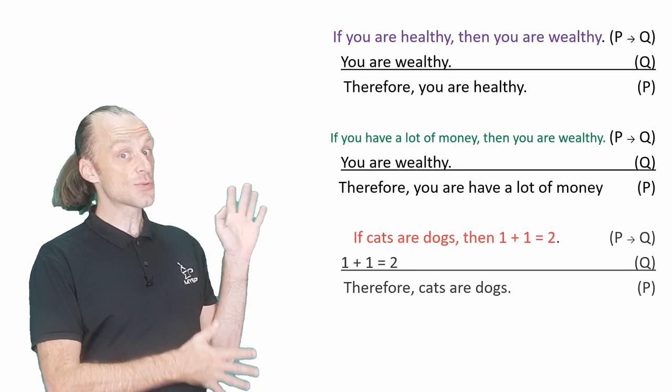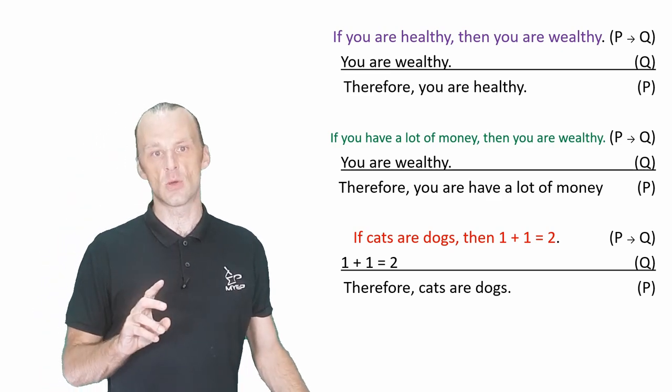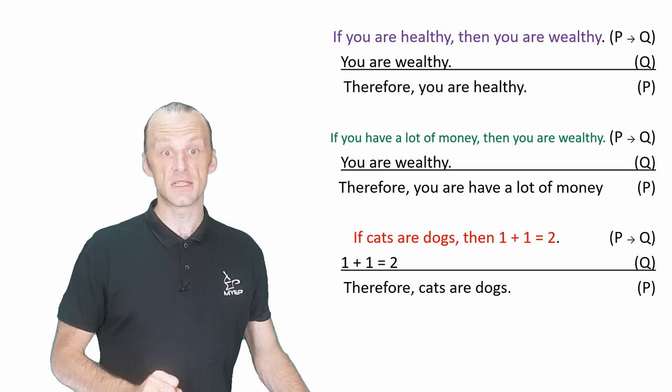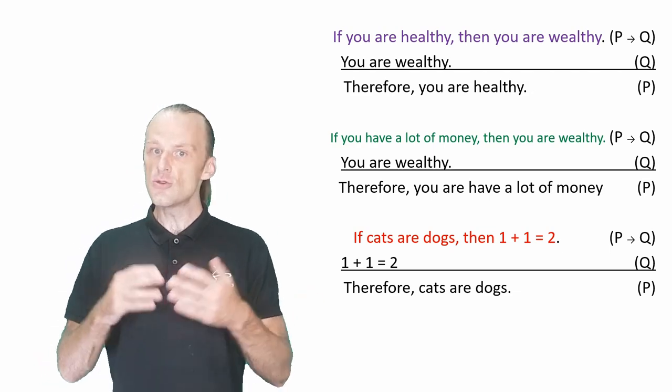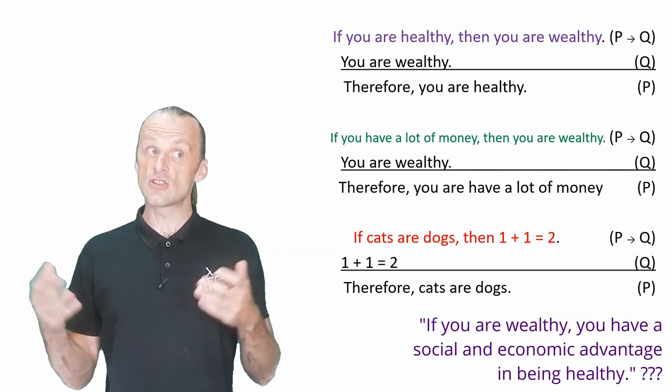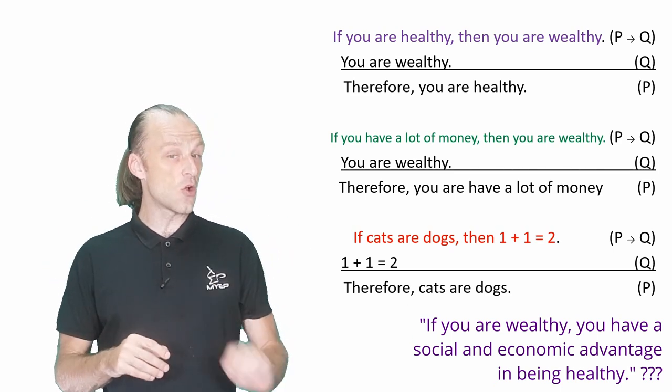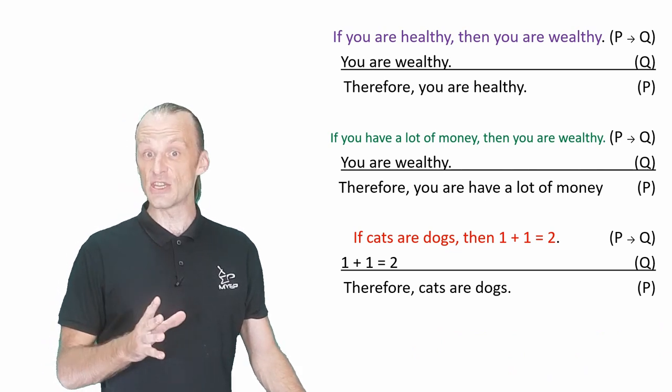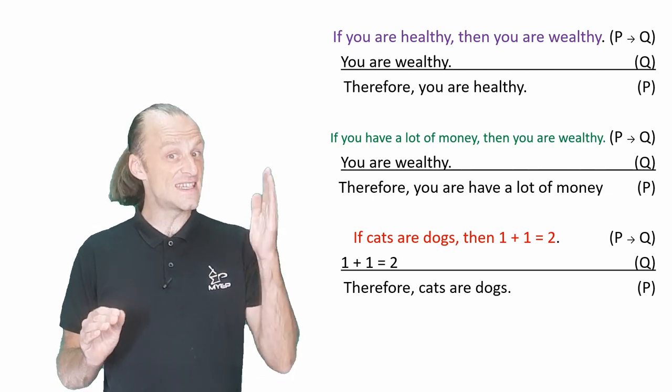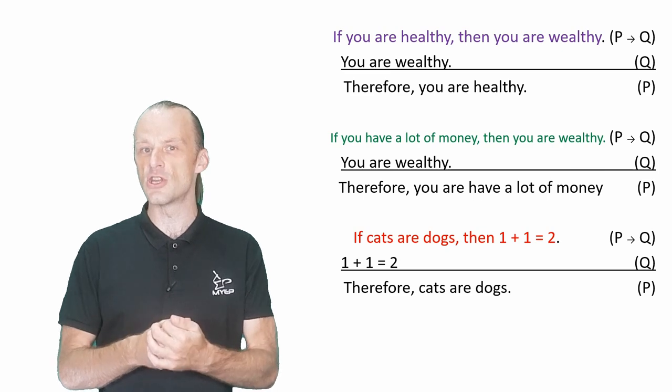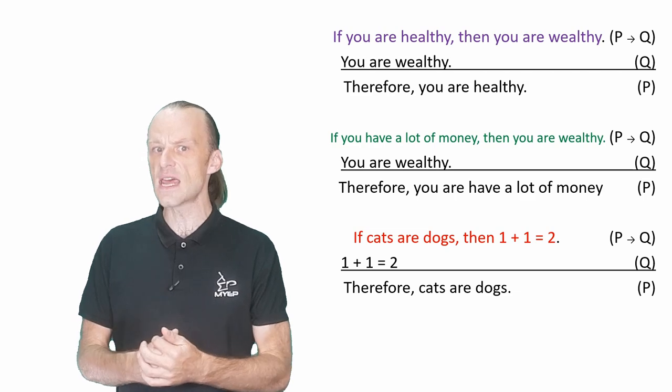For example, look at these three arguments. All of them are examples of the fallacy of affirming the consequent. The first one is the example from the last slide. It is fairly clear that the two premises do not entail the conclusion. You could say that if you are wealthy, you have a social and economic advantage in being healthy, but that is a different and more complex argument. We could also attack the conditional in this first case, but the second argument modifies it so that the conditional is definitely true. In fact, it is a tautology, but the argument as written is still invalid for exactly the same reason as the first.